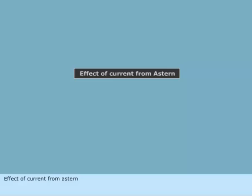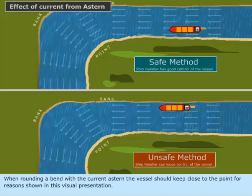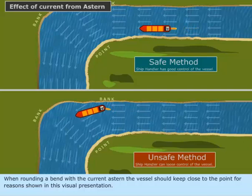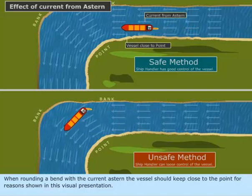Effect of current from astern. When rounding a bend with the current astern, the vessel should keep close to the point, for reasons shown in this visual presentation.